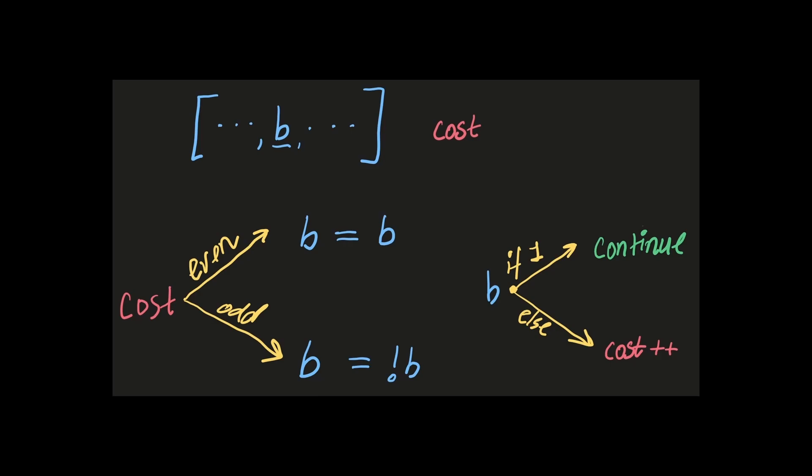That's because it has been flipped an odd number of times. So, one becomes zero and then becomes one and then perhaps becomes zero again. So, if the cost is odd, we have to flip the bit.